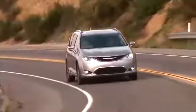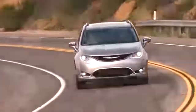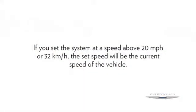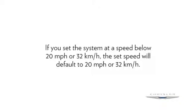Take your foot off the accelerator and the vehicle will cruise at the speed you've selected. If you set the system at a speed above 20 mph or 32 kmph, the set speed will be the current speed of the vehicle. If you set the system at a speed below 20 mph or 32 kmph, the set speed will default to 20 mph or 32 kmph.